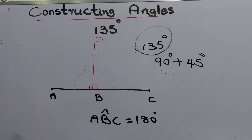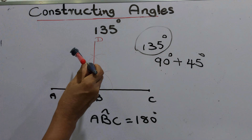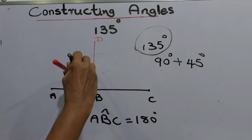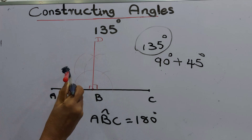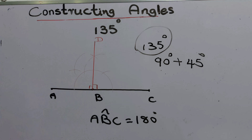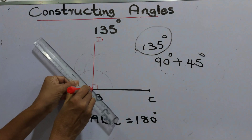There's an arc here — we can draw it. Keep the compass point here, draw another arc, and another arc here. Then we can join this point to B.